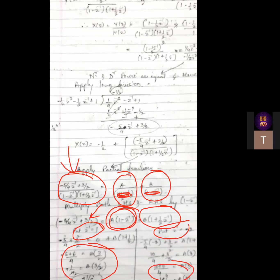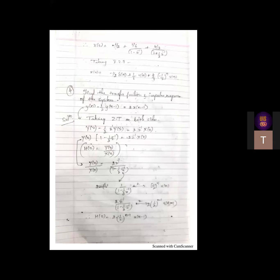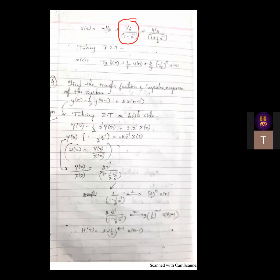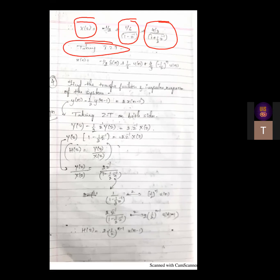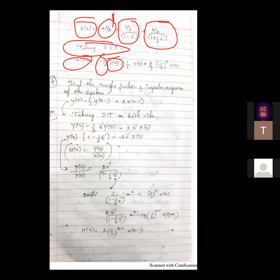First substitute Z-inverse equal to one so that A goes to zero and you get B. Then substitute another value so that B goes to zero and you get A. Once you have A and B values, substitute them. For the inverse Z transform of X of Z: the quotient term minus-half has no Z expression, so its inverse Z transform is minus-half times delta of N, since the inverse Z transform of 1 is delta of N.